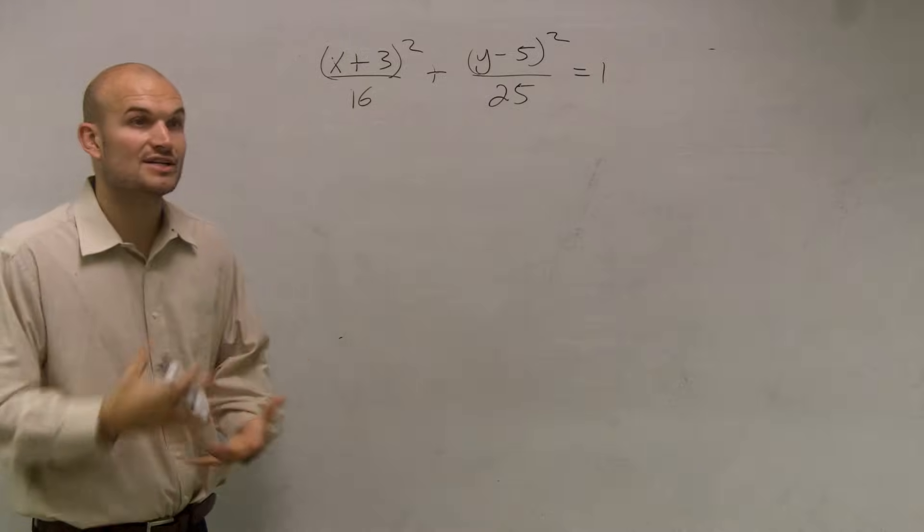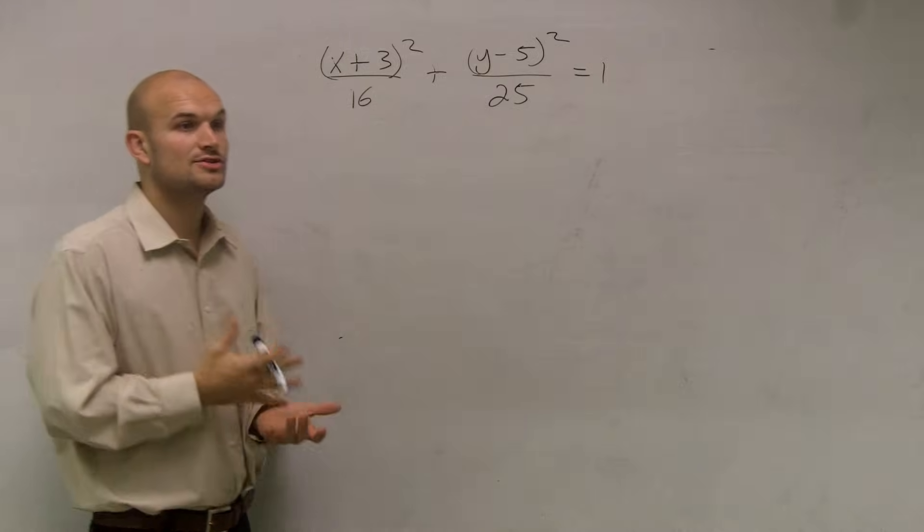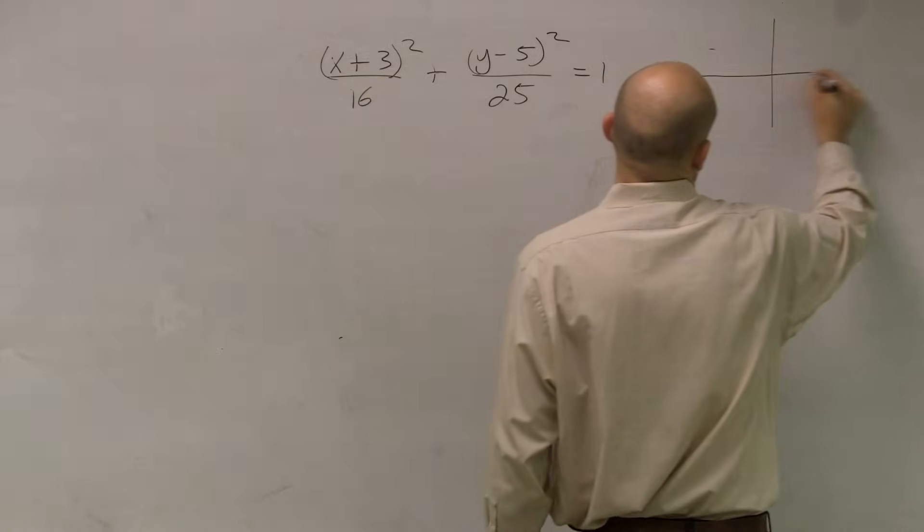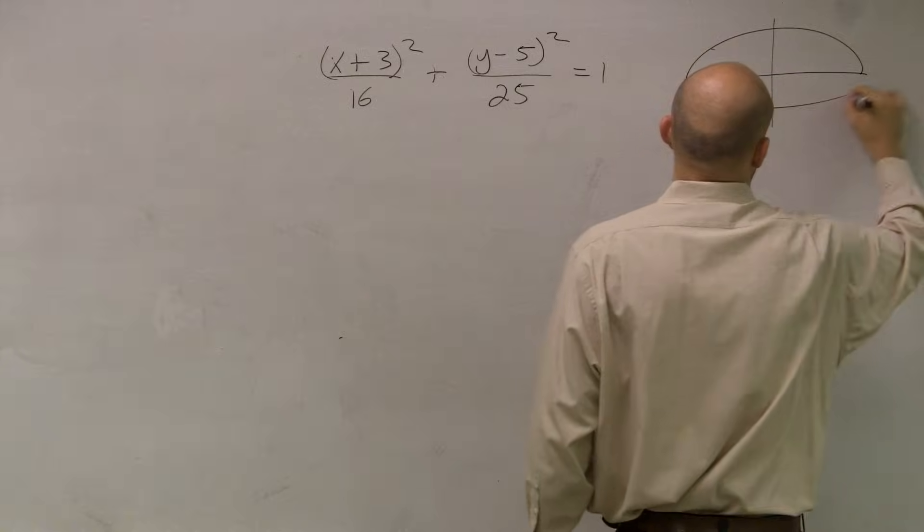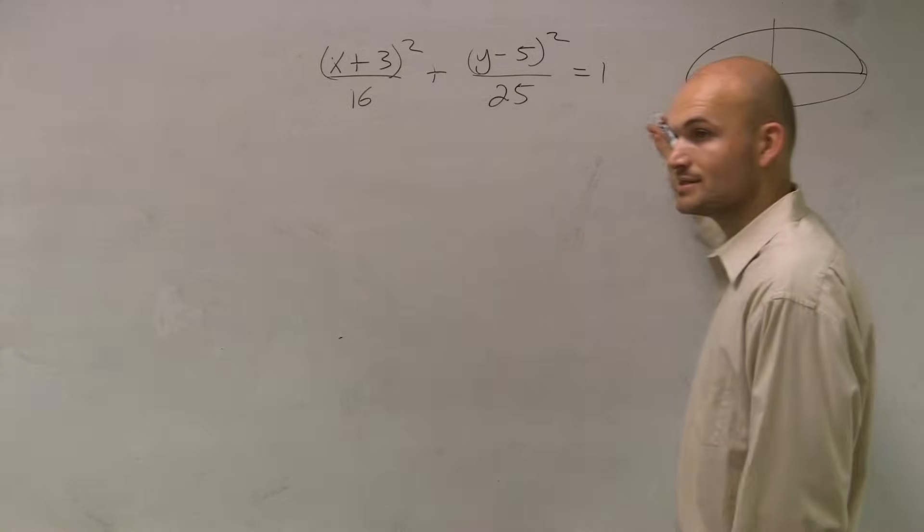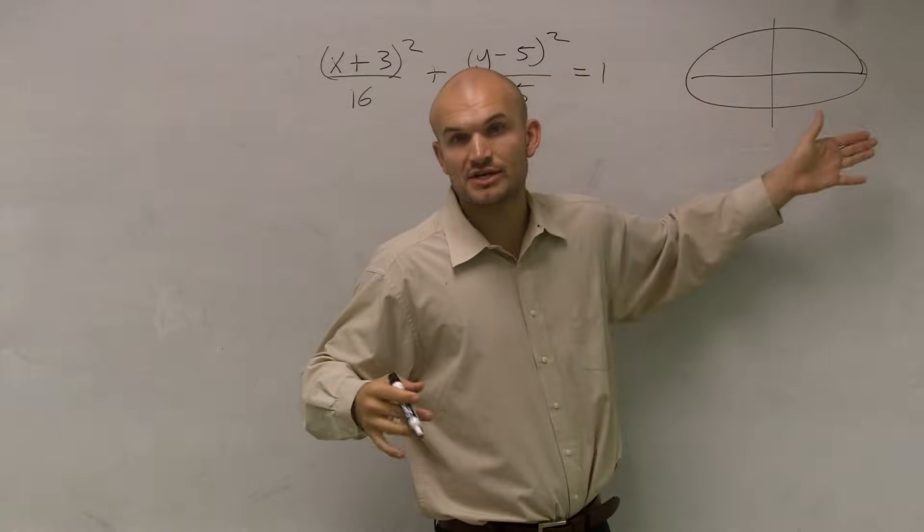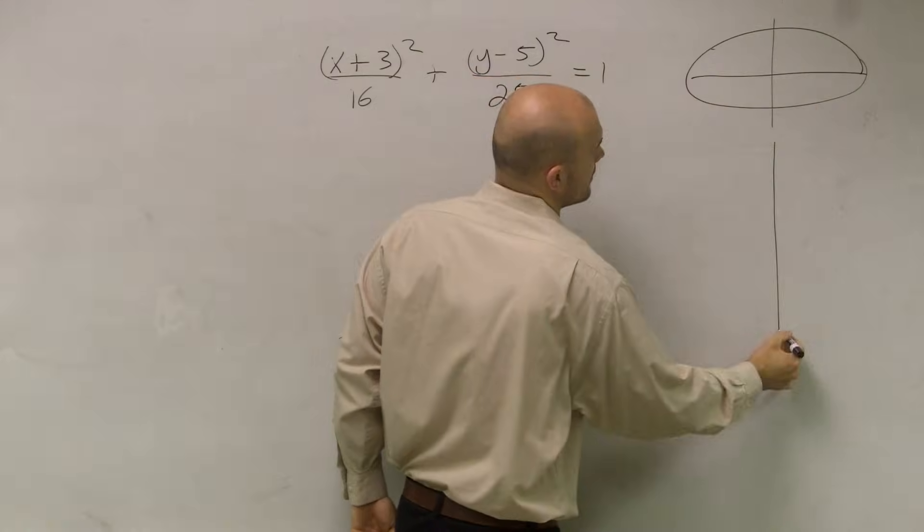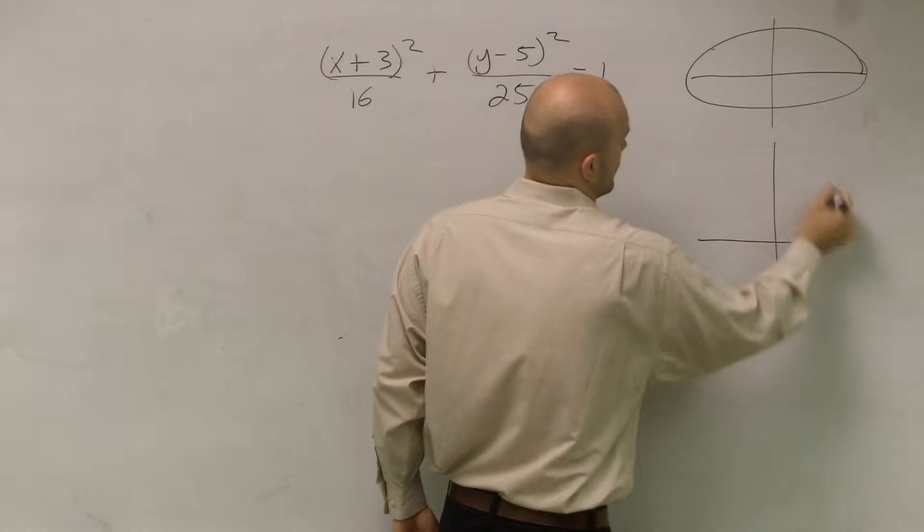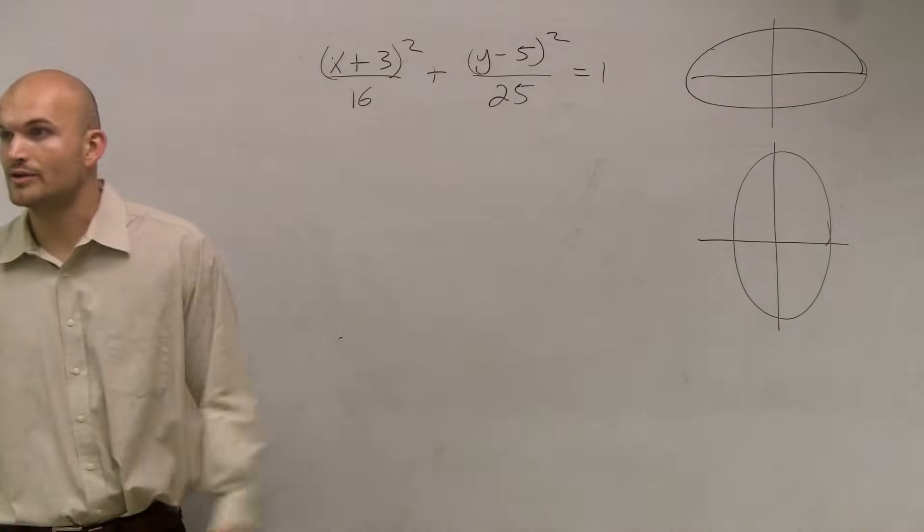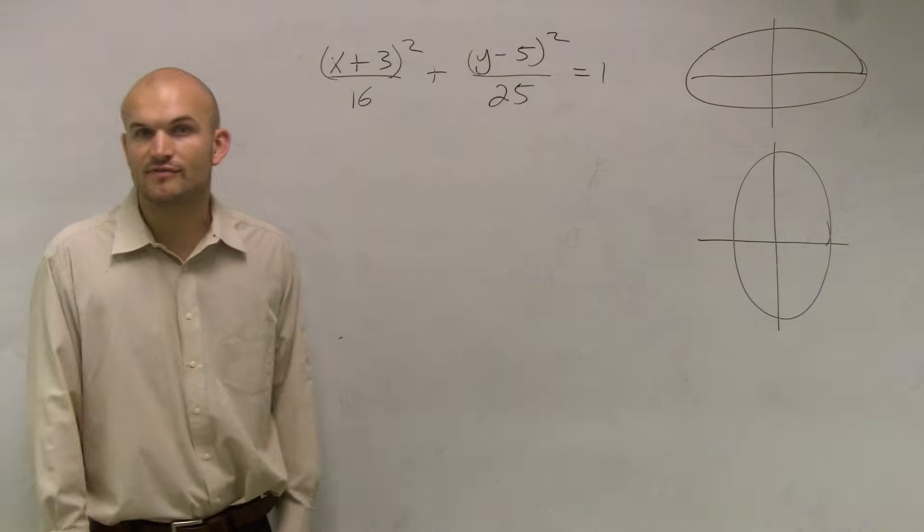So first of all, again, just like parabolas, we need to determine there's two types of ellipses we can have. We can have one ellipse where we have a major axis of symmetry, like here your x-axis is going to be the major axis, meaning the longer part is going to be your major axis of symmetry. Or we could have it where we're going to have a vertical axis of symmetry. And of course, just like parabolas, these have two different equations.